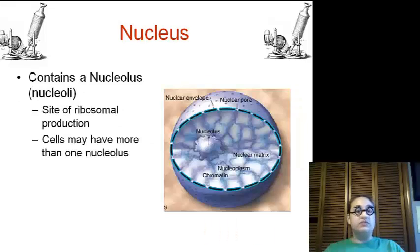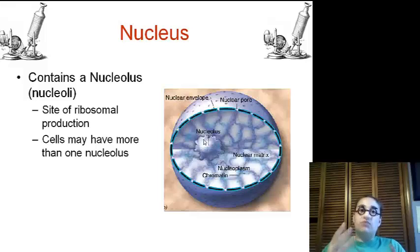Also, inside of our nucleus, we contain a nucleolus, which is a dense part in the center. It will typically be darker, and it is where ribosomes are created. And some cells have more than one nucleolus.